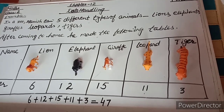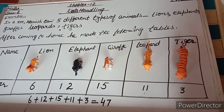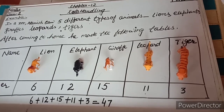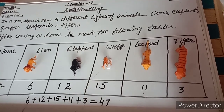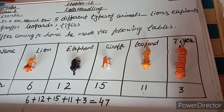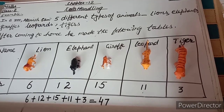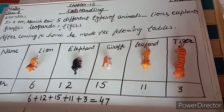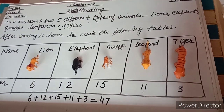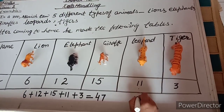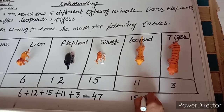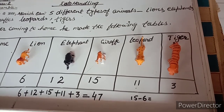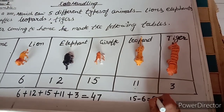How many more giraffes did he see than lions? There are 15 giraffes and 6 lions. So 15 minus 6 equals 9.